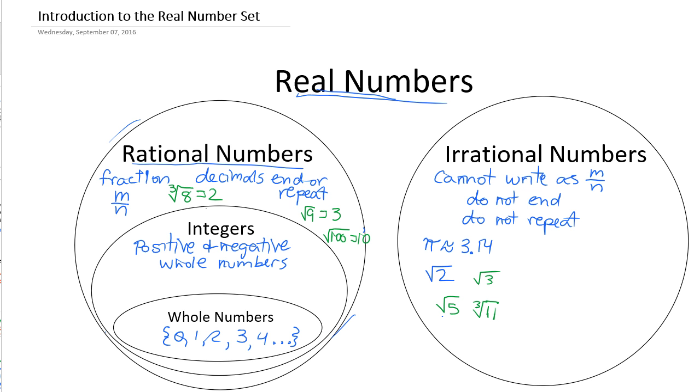So the cubed root of 8, square root of 9, square root of 100, those are all rational numbers, even though they are roots, whereas the square root of 2, square root of 3, square root of 5, the cubed root of 11, so on and so forth, those are irrational numbers. So any square root that does not have a whole number solution is an irrational number.